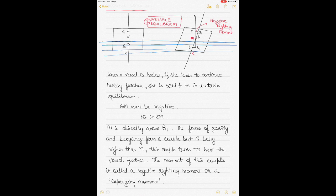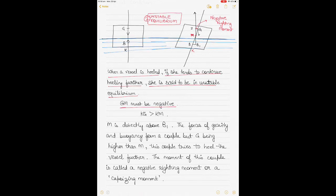In the unstable case, the center of gravity is above M, so KG is greater than KM. When a vessel is heeled and she tends to continue heeling further, she is said to be in unstable equilibrium. There is no positive righting lever — instead, GZ acts in the opposite direction, creating a negative righting lever. GM becomes negative because KG is greater than KM.